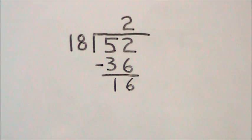When doing this division problem with remainders, the 16 would be a remainder because it's smaller than our divisor of 18. So with remainders, we have an answer of 2 remainder 16.